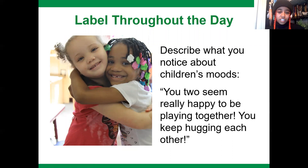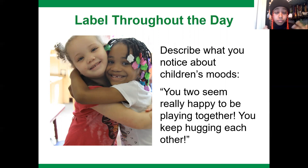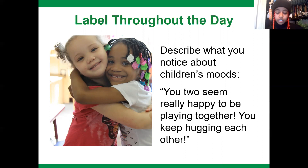As we talked about earlier, it's best to use incidental teaching to grow children's emotional vocabulary. Describe what you notice about children's mood throughout the day. For example, looking at a photo, you could say, 'You two seem really happy to be playing together — you keep hugging each other.' You're using regular incidents that happen inside the classroom and regular activities to describe the emotions the children are feeling and showing, in order to grow their vocabulary.